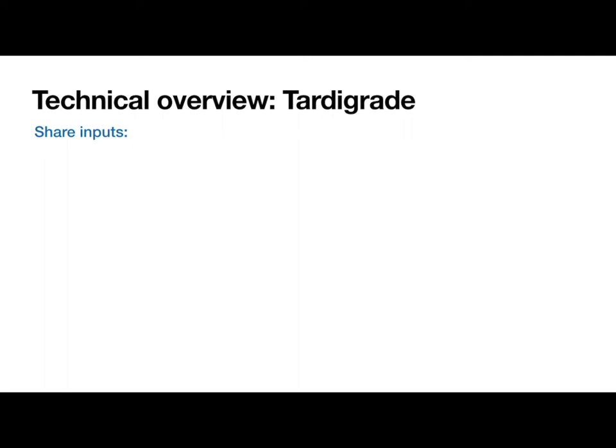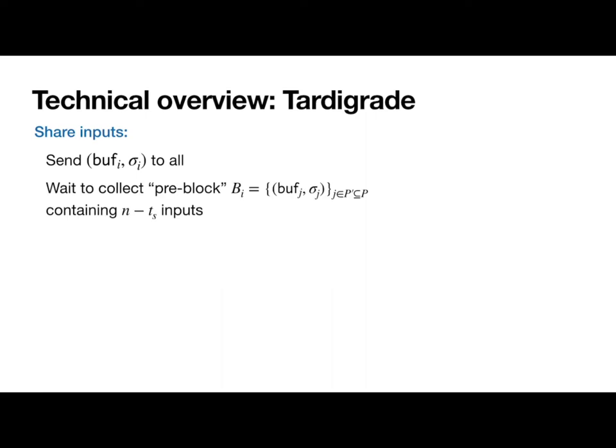The process for agreeing on a new block has four main stages: an input stage, two agreement stages, and an output stage. In the input stage, each party signs their whole buffer and sends both their buffer and that signature to all other parties. Once a party has received buffers and signatures from enough different parties, they bundle them together and input them to the agreement stages. We call these bundles of signed buffers pre-blocks for short.